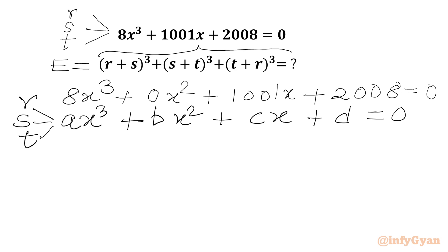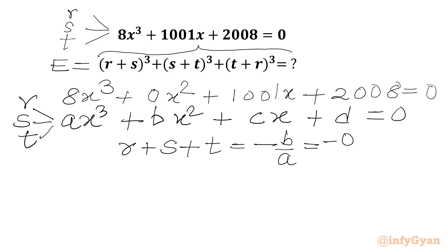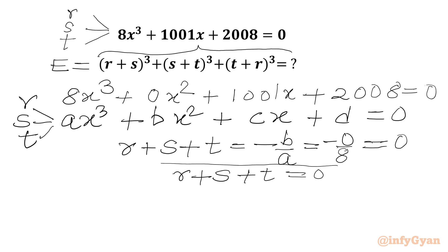Using Vieta's formulas, the sum of roots r + s + t equals −b/a, which is −0/8 = 0. So our first equation is r + s + t = 0.